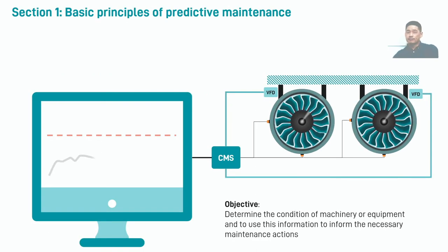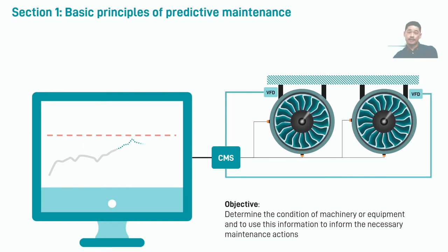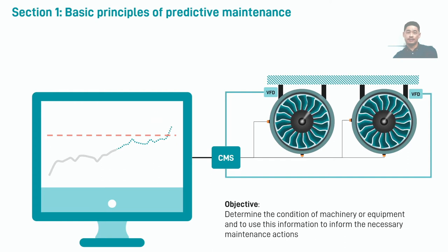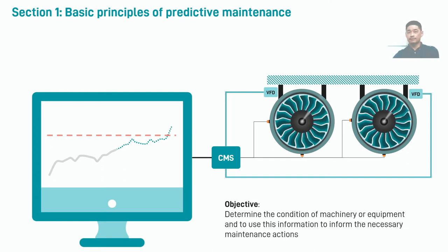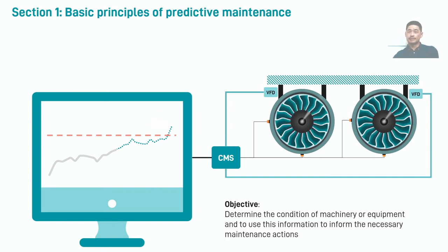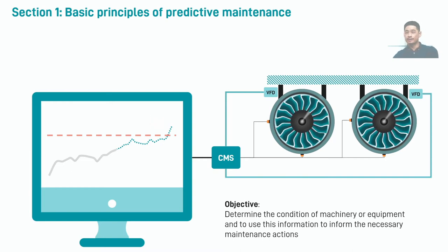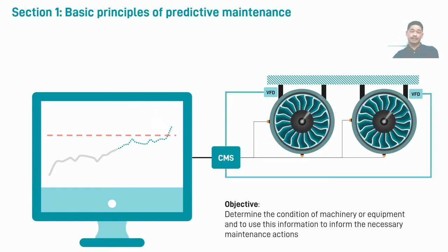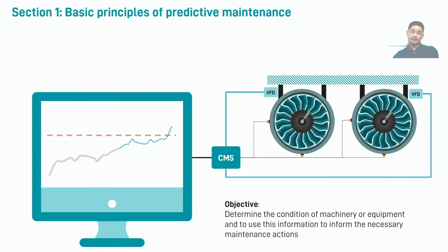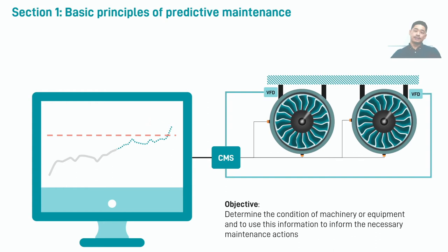The general objective of predictive maintenance is to determine the condition of machinery or equipment and to use this information to inform the necessary maintenance actions. We can separate that objective into two key components. The first is using sensors or monitoring equipment to determine the current condition of the equipment, whether periodically or continuously. The second is taking that current condition information, comparing it with its previous condition, and then deciding what maintenance actions, if any, are needed and when they need to be scheduled.